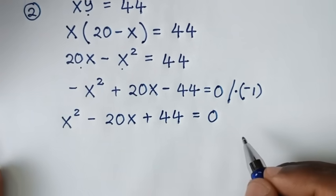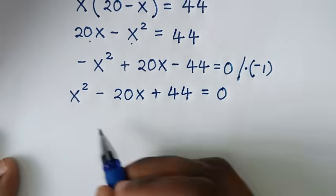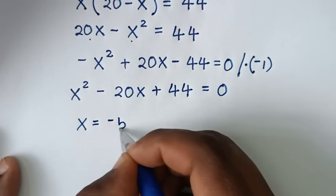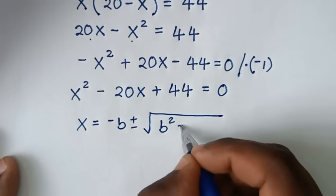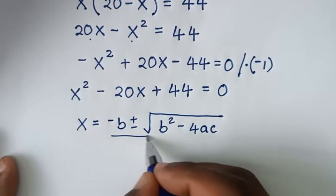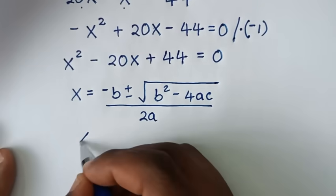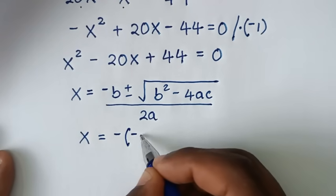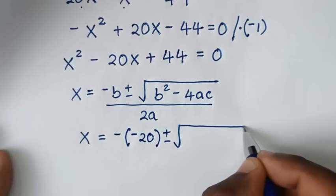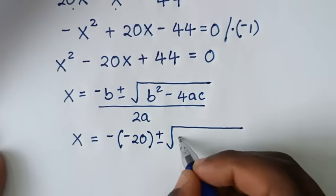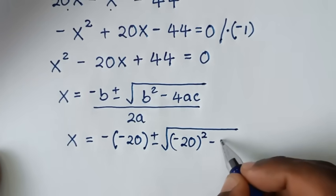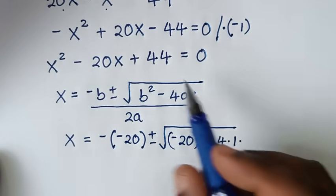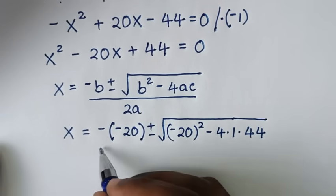To find the values of x from this quadratic equation, we use the quadratic formula: x equals negative b plus or minus square root of b squared minus 4ac, all over 2a. Here b is the coefficient of x, which is negative 20; a is the coefficient of x squared, which is 1; and c is 44.